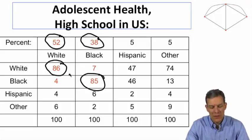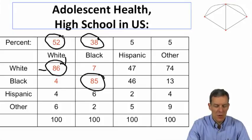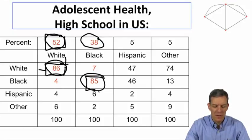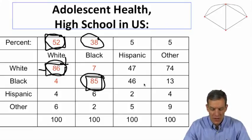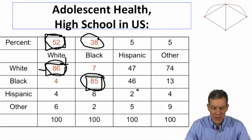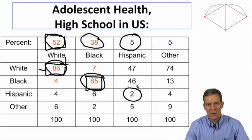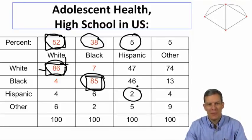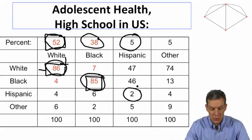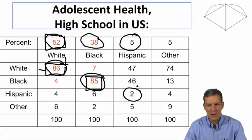This is where you begin to see the differences between what would happen at random and what's actually happening in the data. Interestingly, Hispanics are somewhat outbred — they're 5% of the population, but only 2% of their friendships are with other Hispanics. Smaller groups will tend to have different characteristics than larger groups, but we're seeing a strong segregation pattern overall.